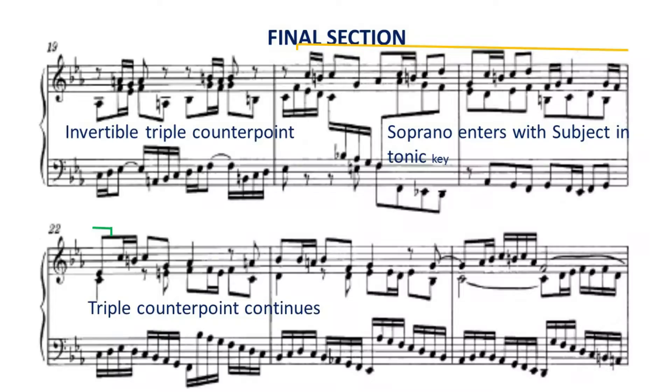The subject enters into the key of E-flat major. With episodes occurring and changes of keys, we soon arrive with the subject entering in the tonic key again at bar twenty, which signifies the beginning of the final section. With the use of contrapuntal techniques among the three voices, we have the subject, the counter subject, and the descending scale figure, as well as a fragment of the subject appearing at bar twenty-five.